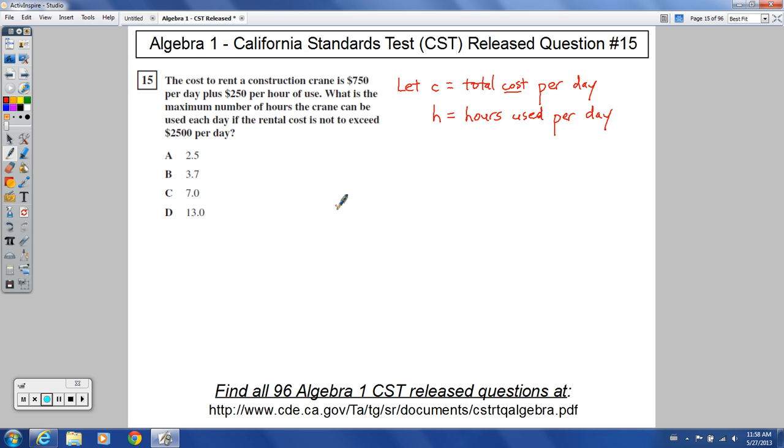With that in mind, we can set up an equation to represent this scenario. Our total cost is going to equal $750 right up front without even using it for a single minute, plus $250 times the number of hours you use it for. So C equals $750 plus $250 times H.